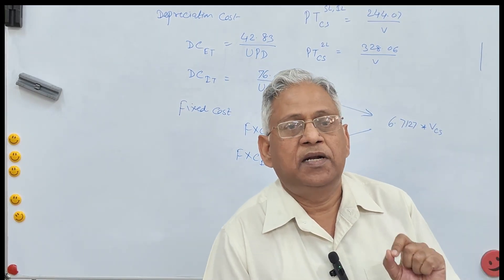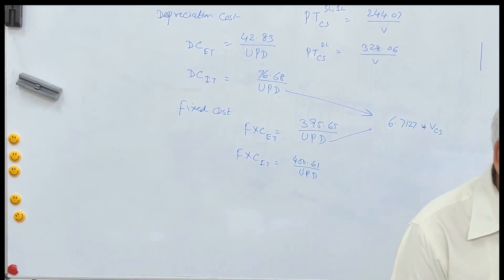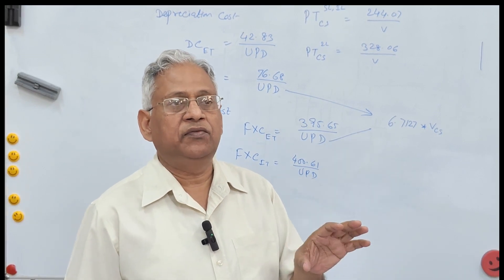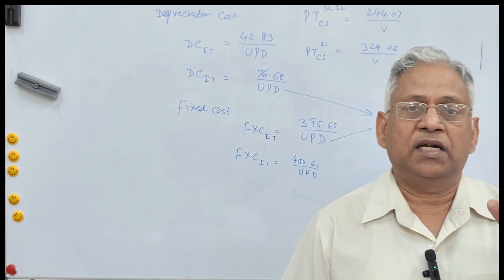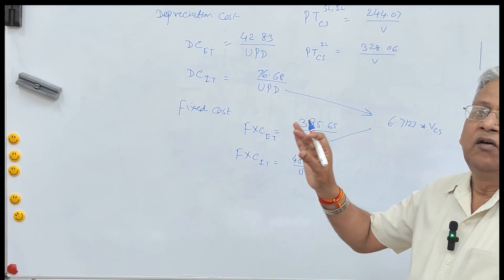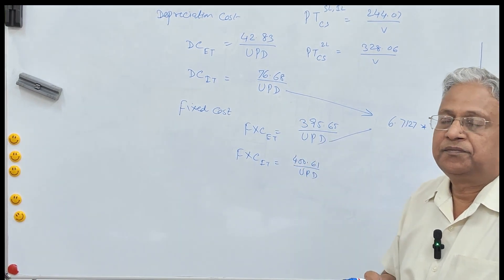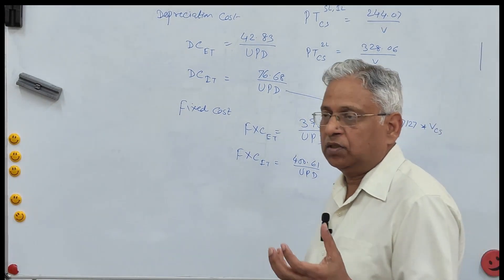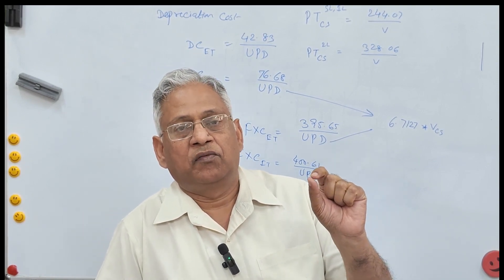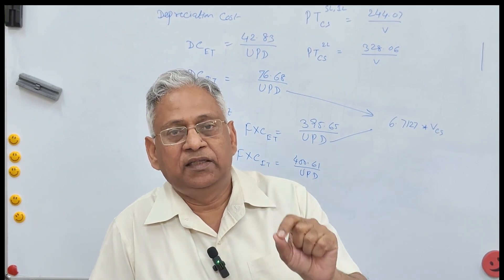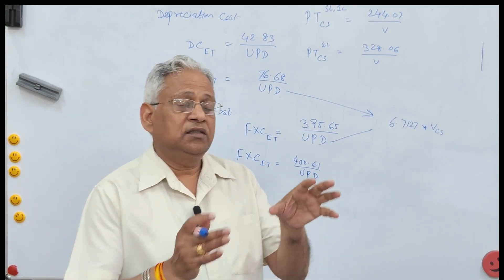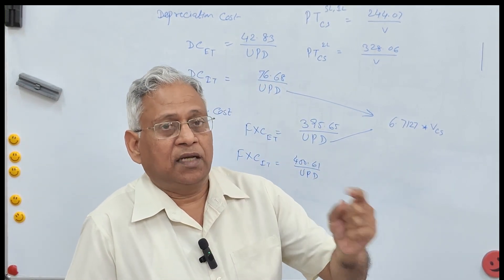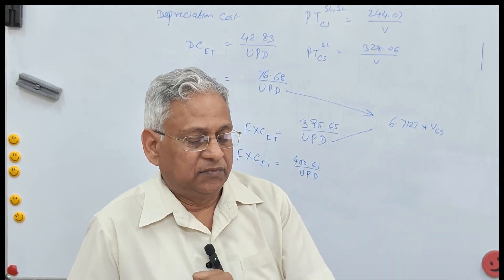IRC SP 30 was updated in 2019, so all prices are suggested to be converted to the 2019 price level. If you are calculating VOC for any future year, say 2024, you must adjust all costs using the wholesale price index of the corresponding year. Using the price index of 2019, IRC SP 30 2019 has suggested costs of individual items for different geometric and surface conditions, but these must be corrected for the wholesale price index of the year of calculation.